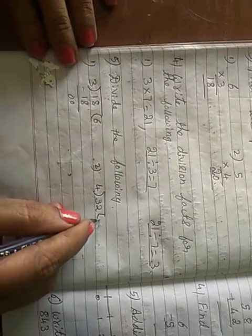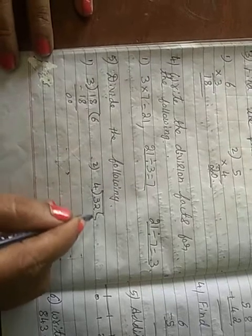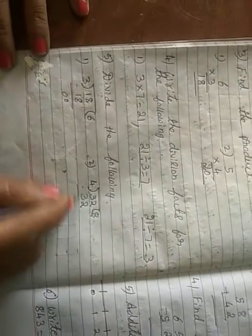4 1's are 4, 4 2's are 8, 4 3's are 12, 4 4's are 16, 4 5's are 20, 4 6's are 24, 4 7's are 28, 4 8's are 32. That is 0.